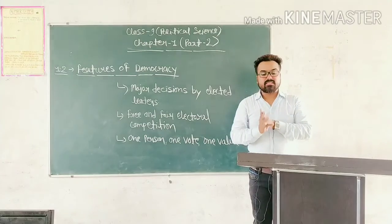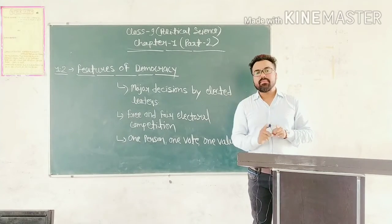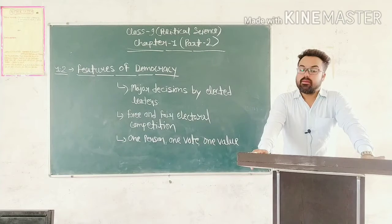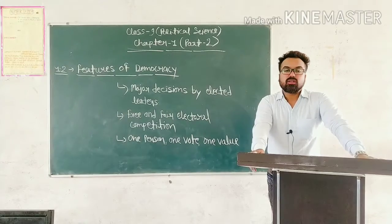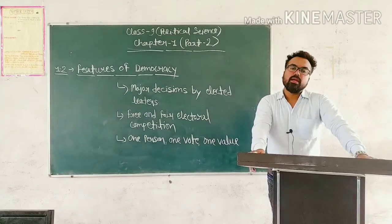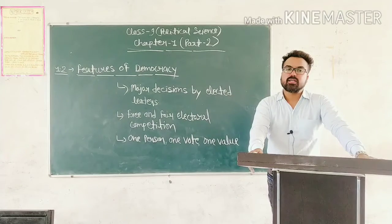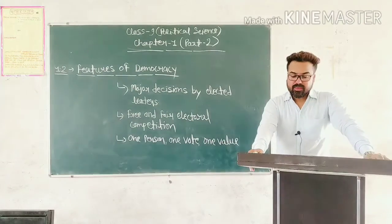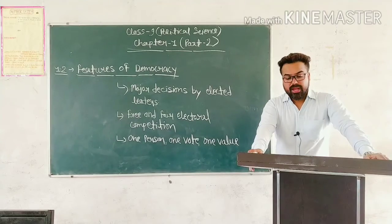Before contesting elections, a candidate needs the approval of the Chinese Communist Party — یدی کوئی چنائوں میں خڑا ہونا چاہتا ہے تو Chinese Communist Party کی approval لینا compulsory ہے۔ Only those who are members of the Chinese Communist Party or eight smaller parties aligned to it were allowed to contest elections held in 2002 and 2003. The government is always formed by the Communist Party.